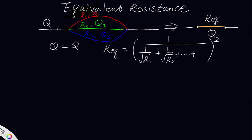If you have more than three airways, you add those additional terms all the way up to the nth airway. This gives you the resistance of the equivalent airway.